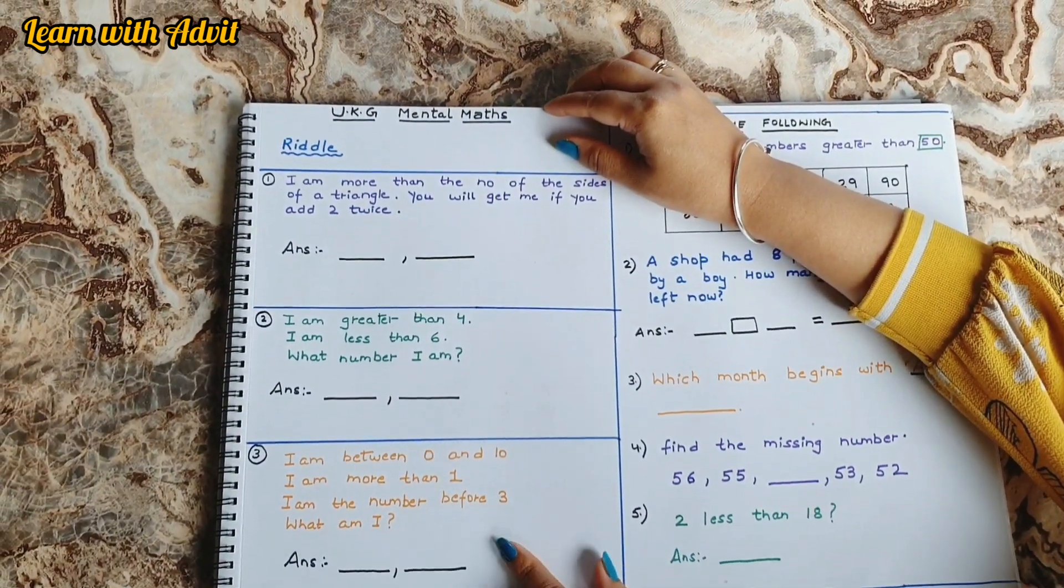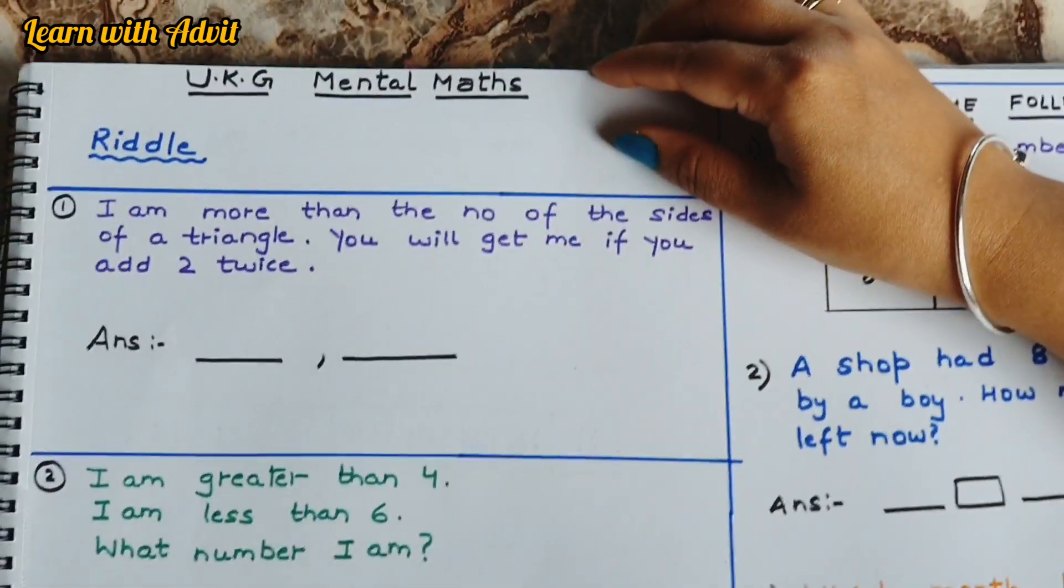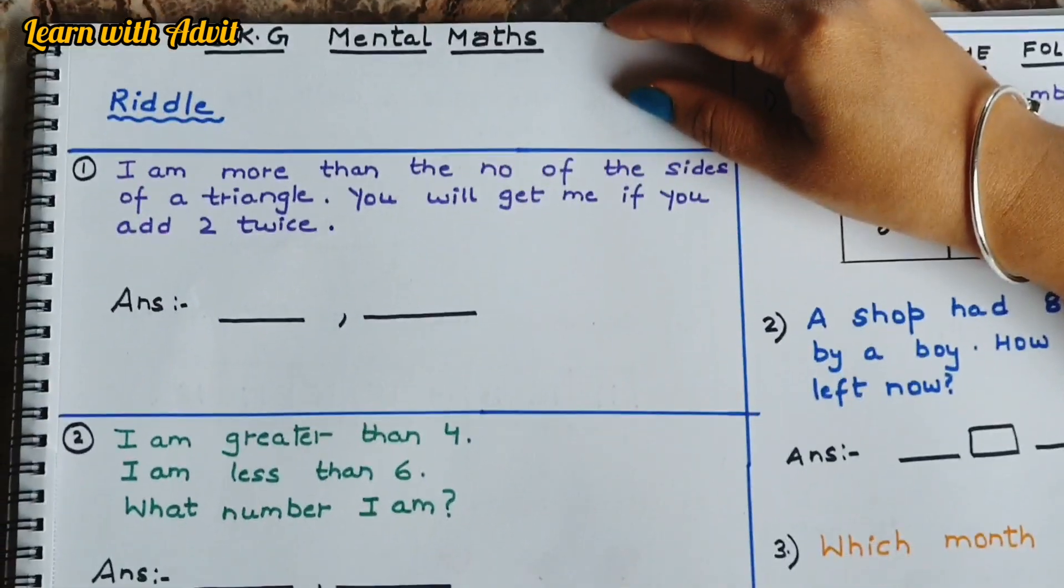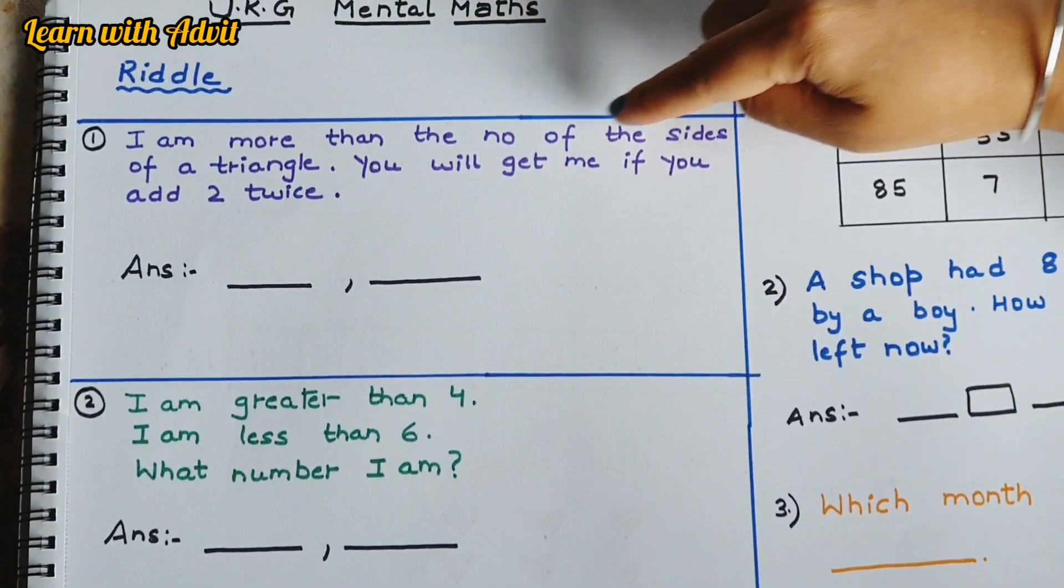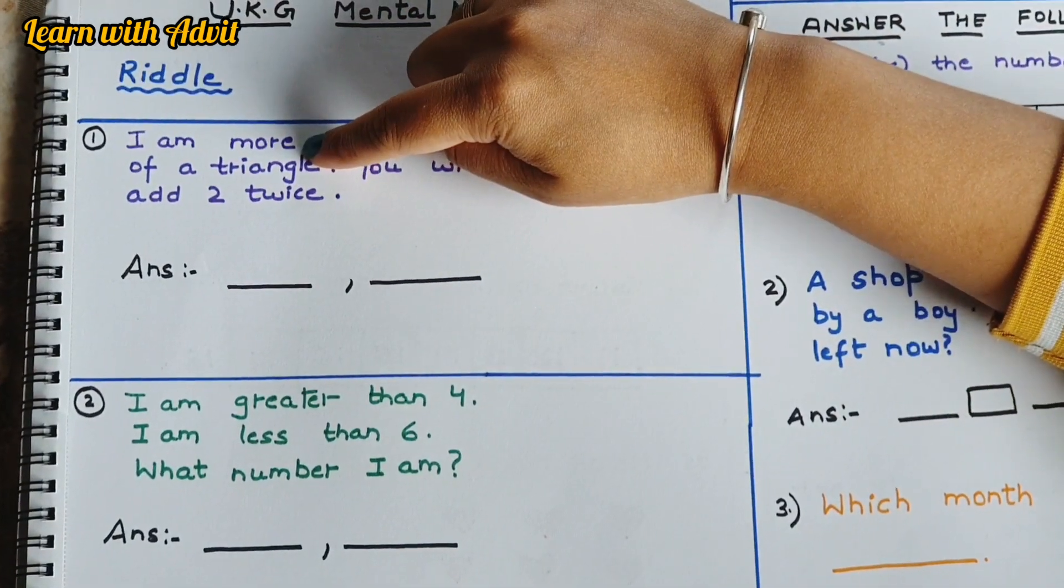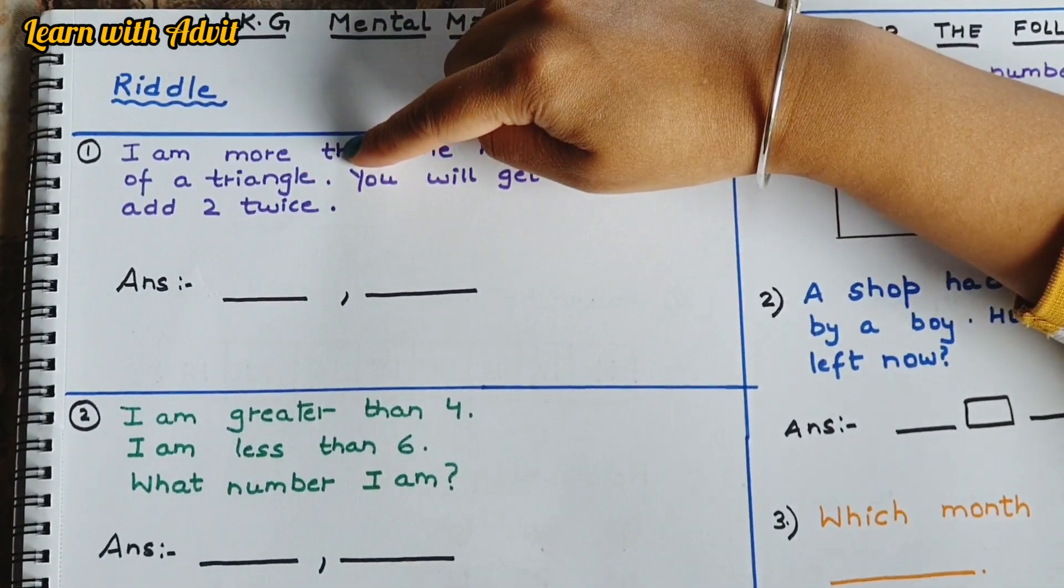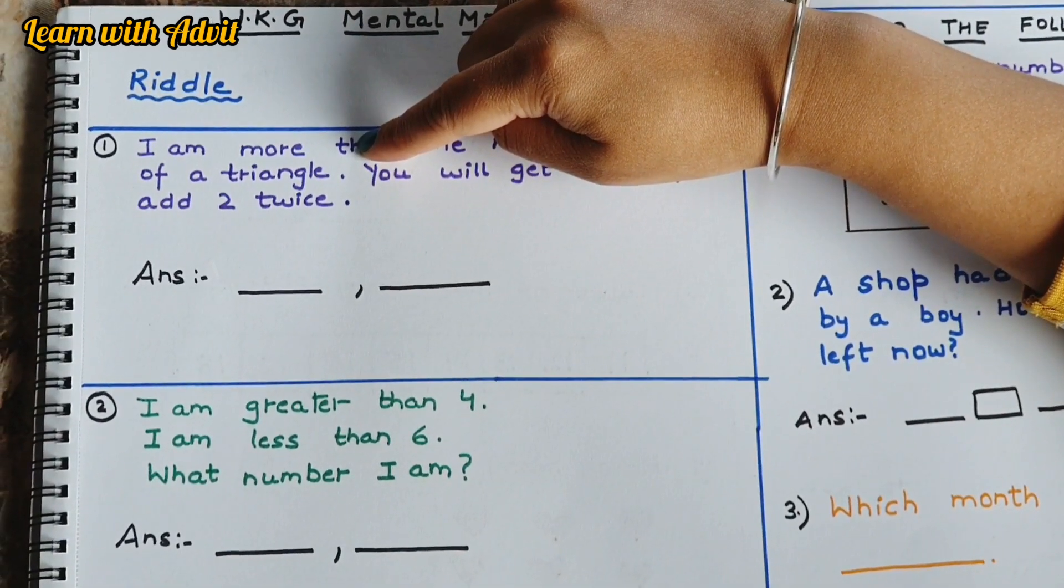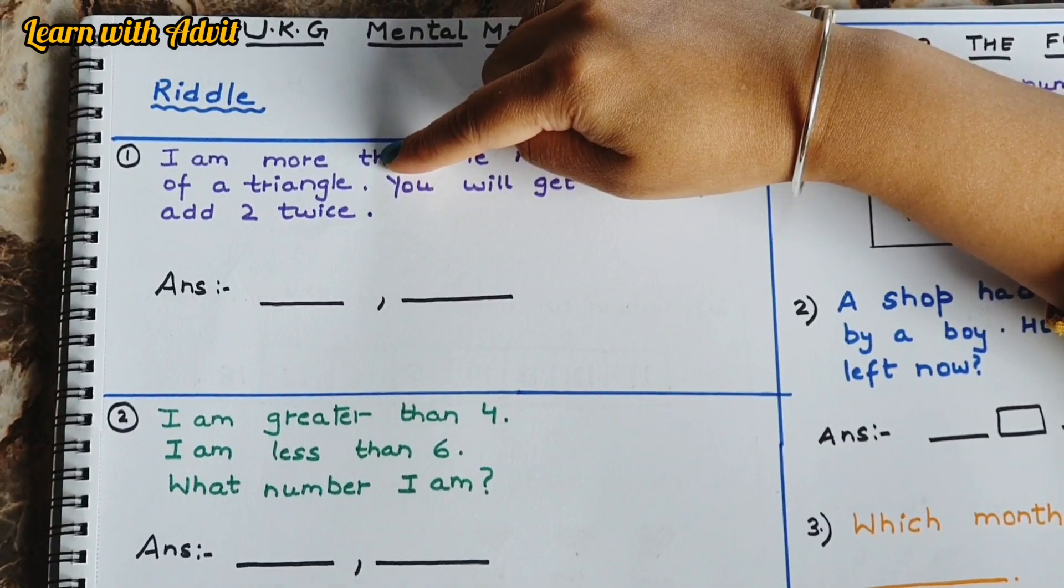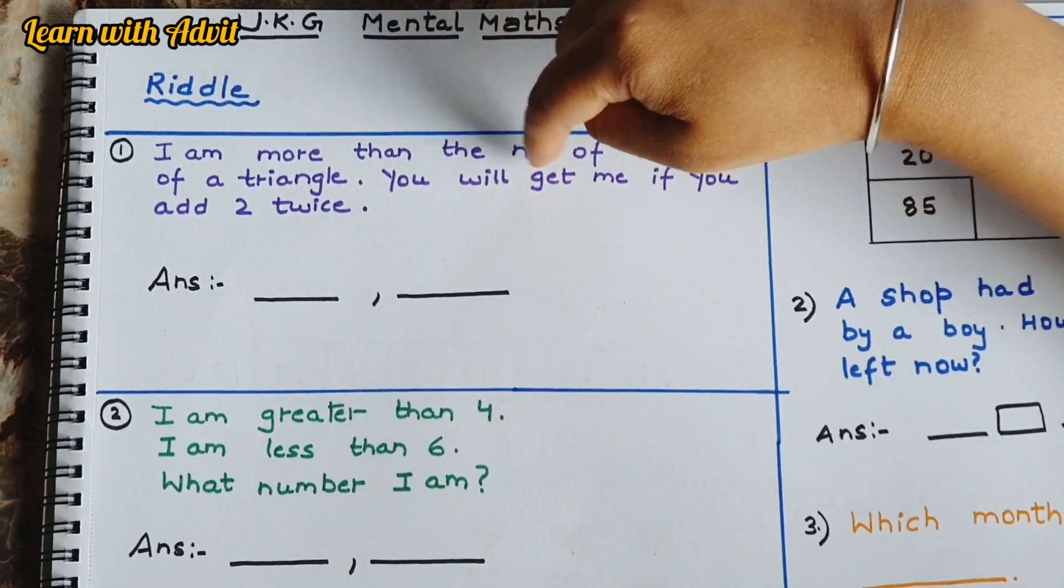So what is the first sheet? It's a riddle question. You have to guess the number according to the hint. First is: I am more than the number of sides of a triangle. That means the number is more than the sides of a triangle. How many sides are there in a triangle? Yes, that means the number is greater than three.